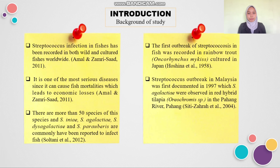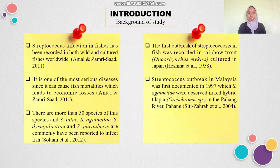For the introduction and background of study, Streptococcus infection in fishes has been recorded in both wild and cultured fishes worldwide. It is one of the most serious diseases since it can cause fish mortalities, which lead to economic losses. There are more than 50 species, and Streptococcus iniae, agalactiae, dysgalactiae, and parauberis are the most commonly reported to infect fish. The first outbreak of Streptococcus in fish was recorded in Rainbow Trout cultured in Japan. Meanwhile, the Streptococcus outbreak in Malaysia was first documented in 1997, where Streptococcus agalactiae was observed in Red Hybrid Tilapia in the Pahang River.